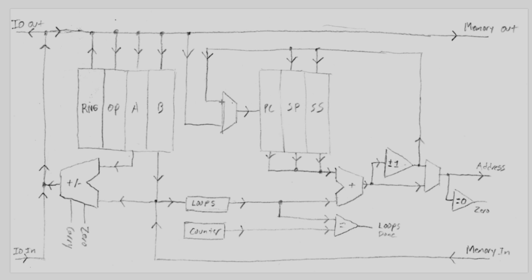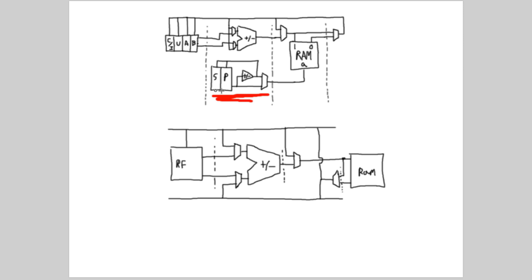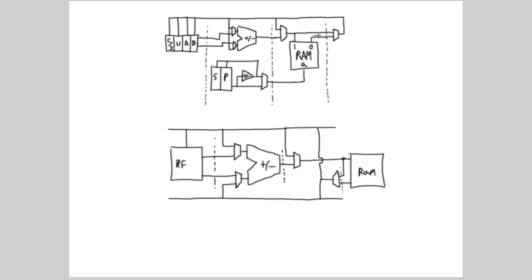The address calculation portion is separate, unlike the previous version where it was technically connected. In the previous model, data could occasionally move from memory to the PC and needed a direct path from the execution side. But in this design, the PC is going to be part of the state machine and the instruction fetch module. We've got a stack pointer and a popped pointer — a feedback system that can increment and decrement and choose between pre and post, and that feeds the address directly into RAM.